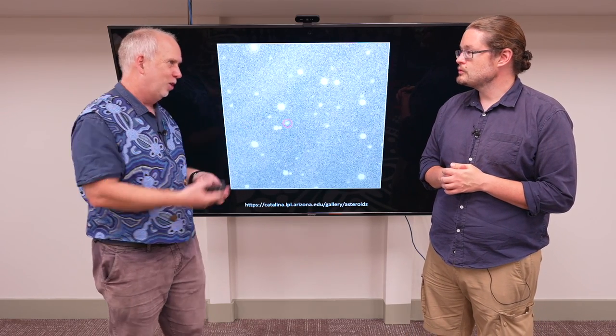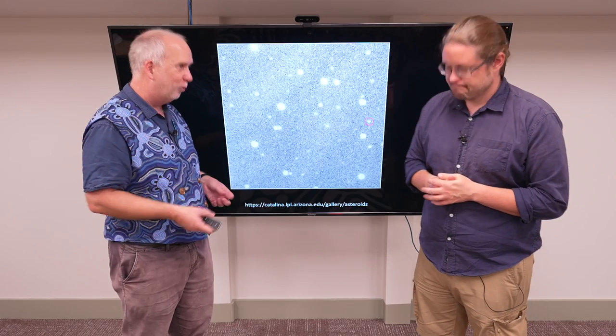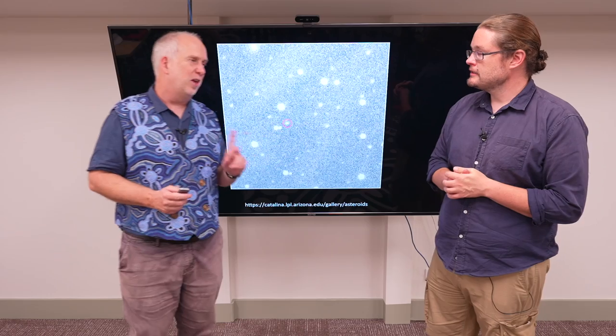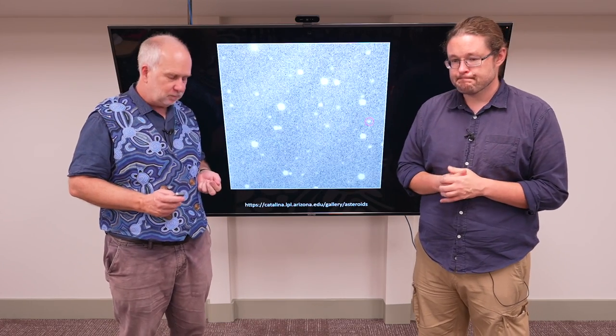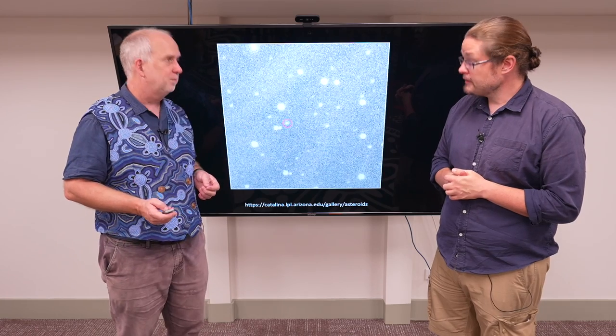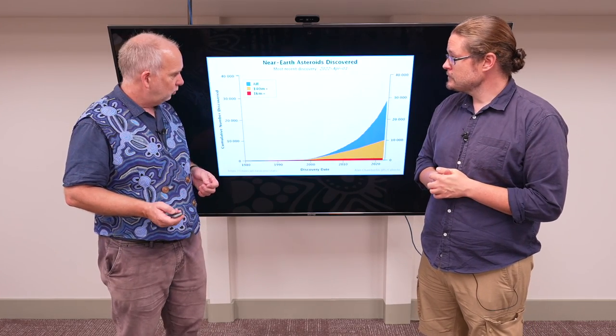So anything that's going to come close to the Earth, it's not normally the first close encounter that's a problem, it's the second or third or fourth, depending how it got deflected on the first one. And to do that, you need a very precise orbit. So they make the more precise measurements and find out what's going on. And what do you see?